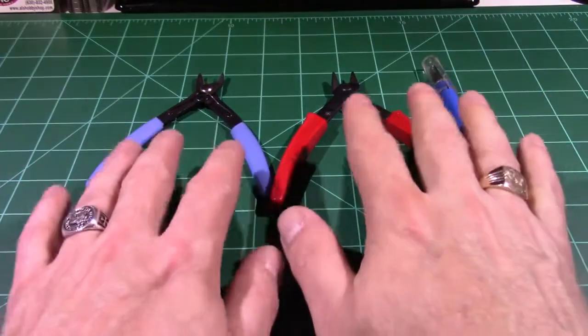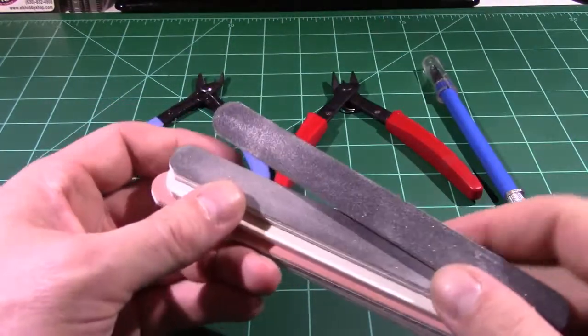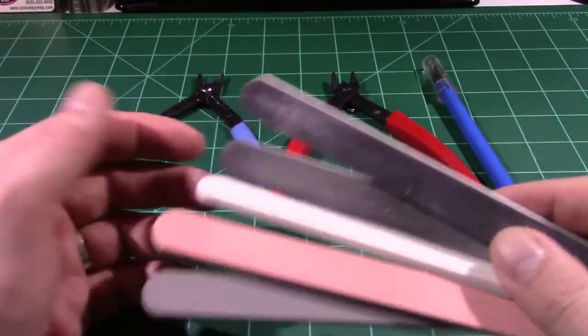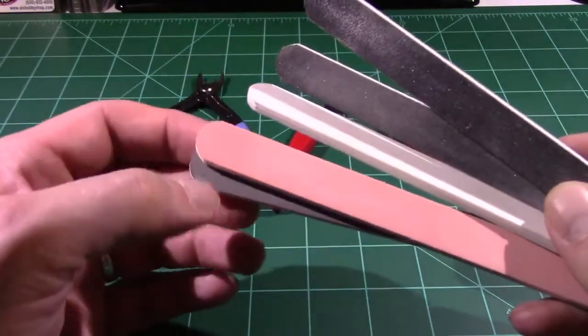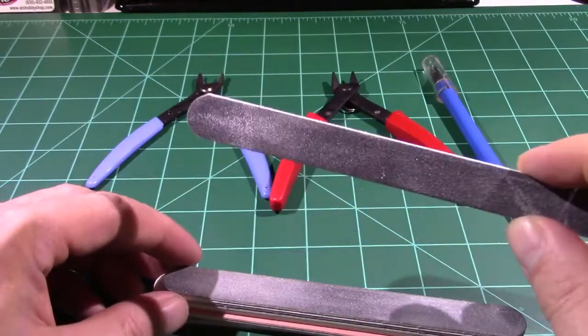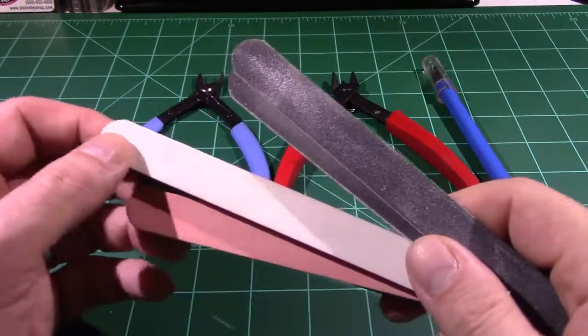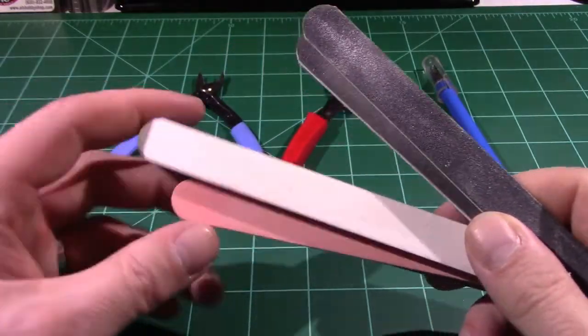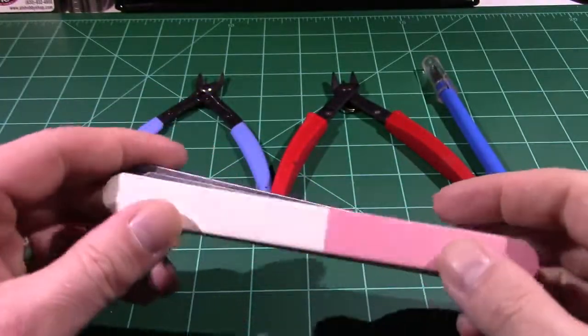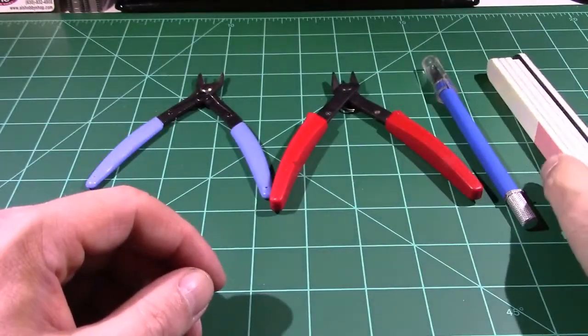Once you've cut the material from the sprue, the next thing you're going to want to do is clean it up. And for that I recommend sanding sticks like these. This actually came from Testers, it was a set and obviously these are done in degrees of roughness. So you can remove a large amount of material and then refine it by polishing it down to where you finally get to the white polishing stick. And that just lets you polish the plastic once you've removed all the material.